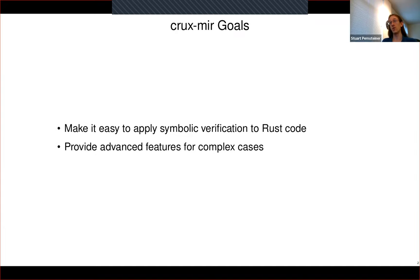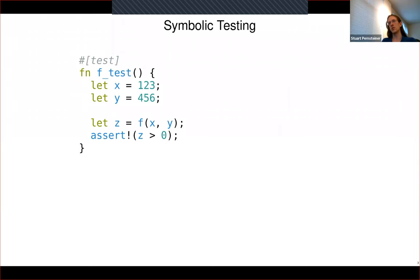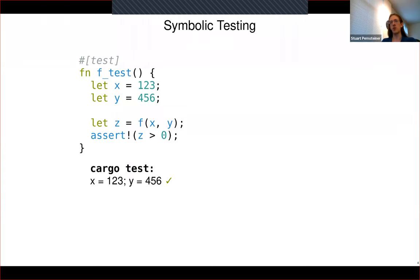The goals of the tool are to make it easy to apply symbolic verification to Rust code, but also provide some advanced features for more complex cases where the code is bigger or the reasoning is more complex. As an example, if you want to write an ordinary concrete test in Rust, you set up some input values, pass them to your function, and assert that the function has returned a result with the appropriate property. You can run this with cargo test, and it will check that on this input, your function does the correct thing.